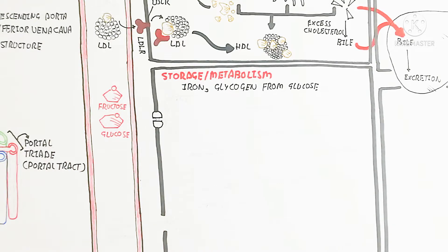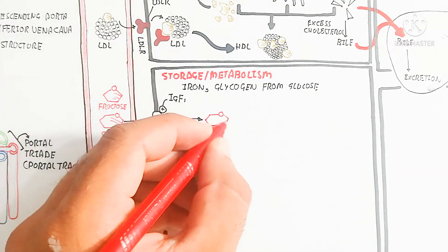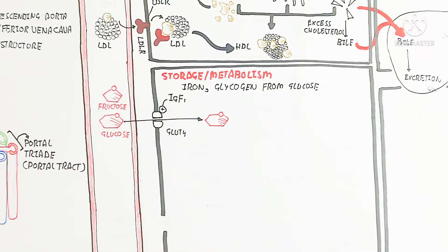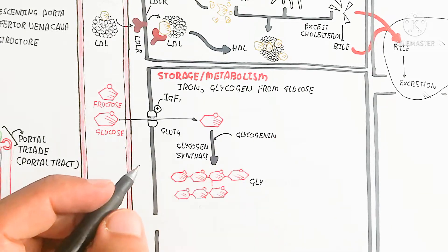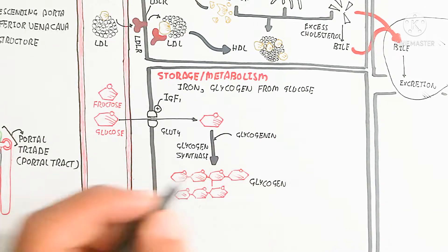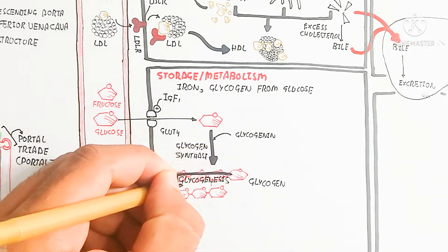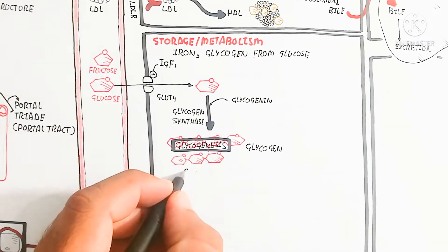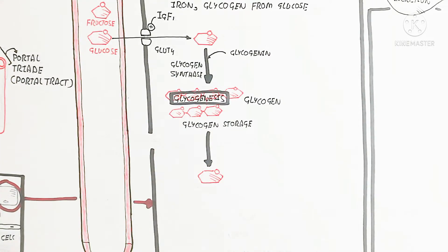The liver also handles storage — for example, iron storage and glycogen formation from glucose. Insulin-like growth factor 1, stimulated by growth hormone, facilitates glucose influx via sodium co-transport. Glycogenin binds with glycogen synthase enzyme to form glycogen through glycogenesis. This glycogen is the storage form, and its breakdown to produce glucose again is known as glycogenolysis.